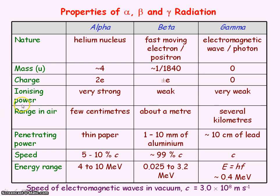We look at the ionising power of radiation. Ionisation is about the ability to remove an electron from an atom. And in order to do this, you need energy. And the alpha particle is very strongly ionising, and that's because it has a lot of energy.